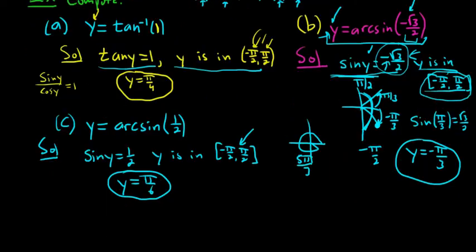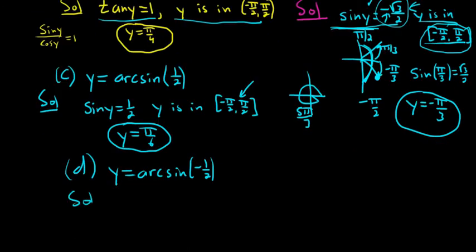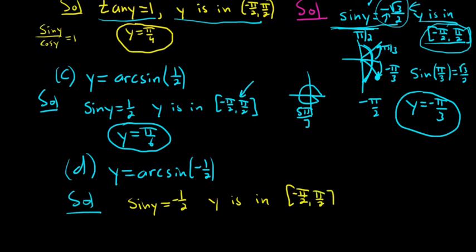Example d: y equals arcsine of negative 1 half. This means the sine function takes y and sends it to negative 1 half, and y is in negative pi over 2 to pi over 2. Since the sine of pi over 6 is 1 half, for negative 1 half the answer is negative pi over 6. Sine is the y-coordinate on the unit circle and is negative in that quadrant, so the answer is negative pi over 6.